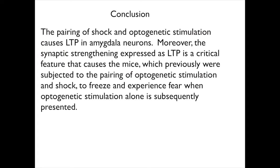For the conclusion: the pairing of shock and optogenetic stimulation causes long-term potentiation in amygdala neurons. Moreover, the synaptic strengthening expressed as LTP is a critical feature that causes mice previously subjected to the pairing of optogenetic stimulation and shock to freeze and experience fear when optogenetic stimulation is subsequently presented.